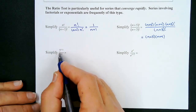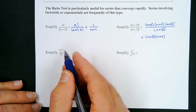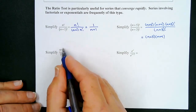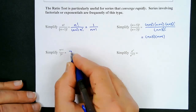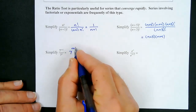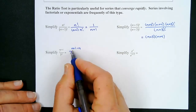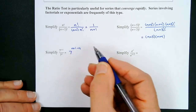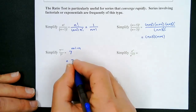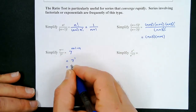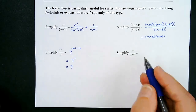For exponentials with the same base — like 7 — we can subtract our exponents. So 7^(n+1) over 7^n becomes 7^(n+1−n), and n minus n is 0, so we have 7 to the first, which is just 7. This simplifies to 7.